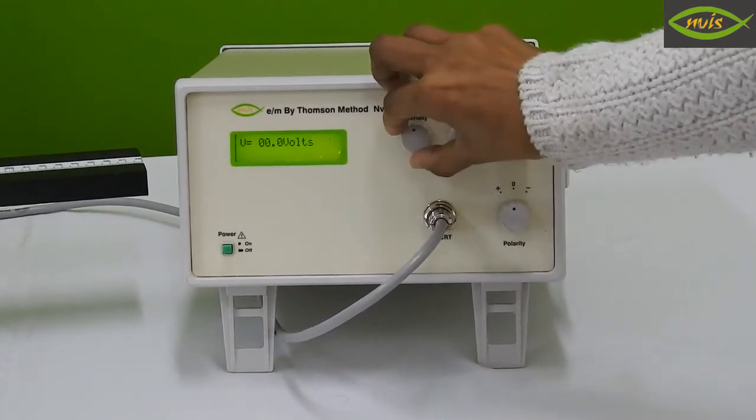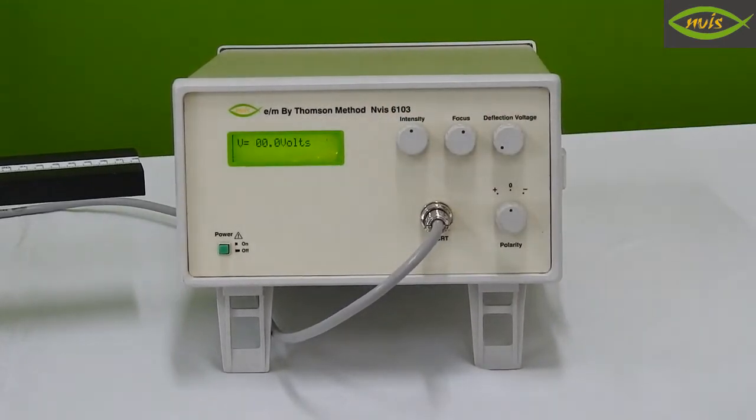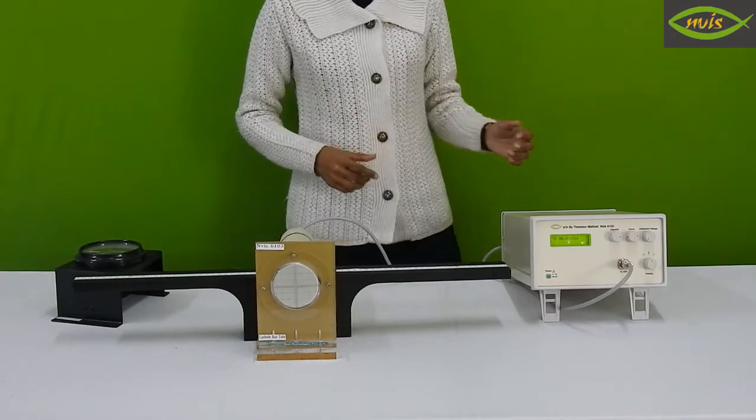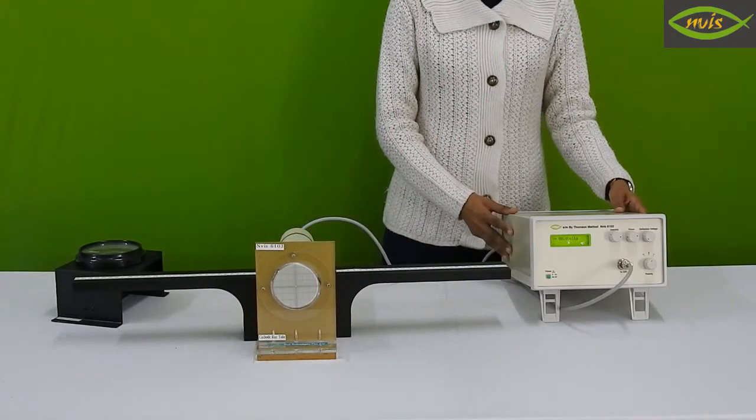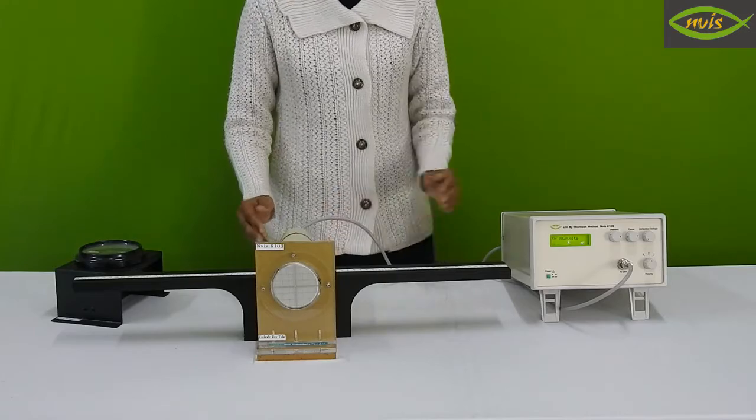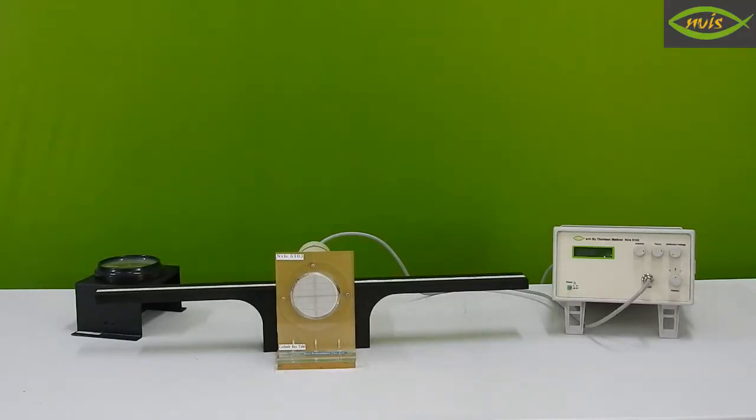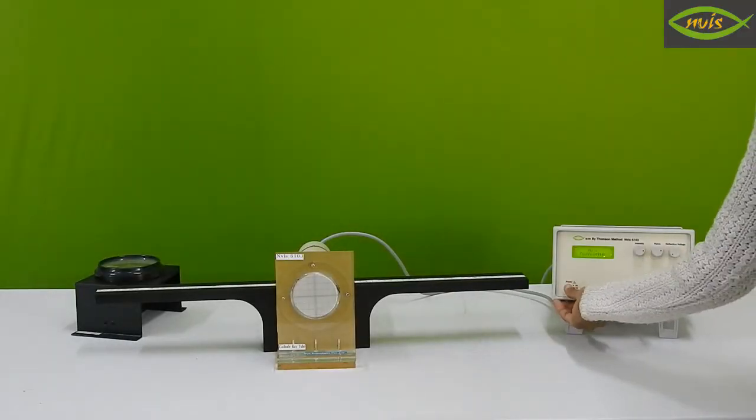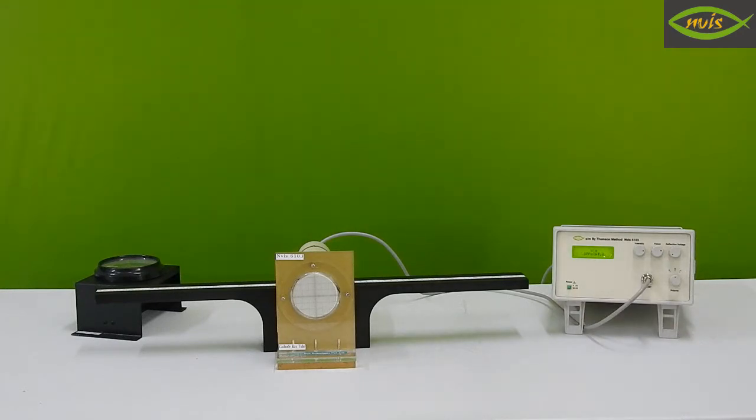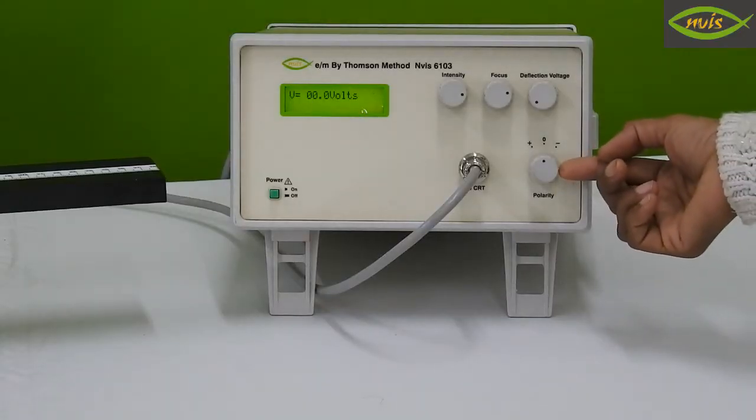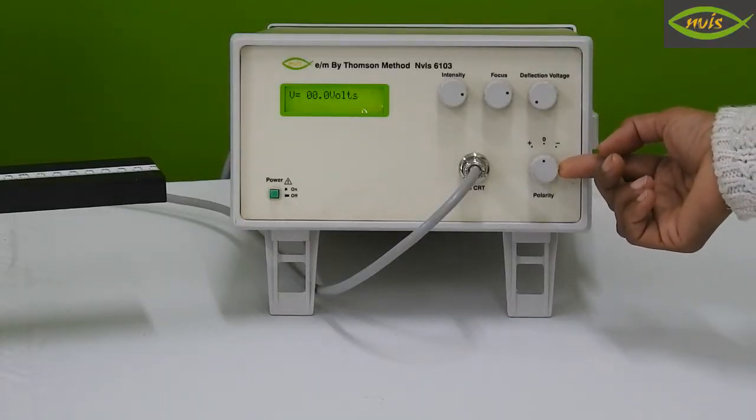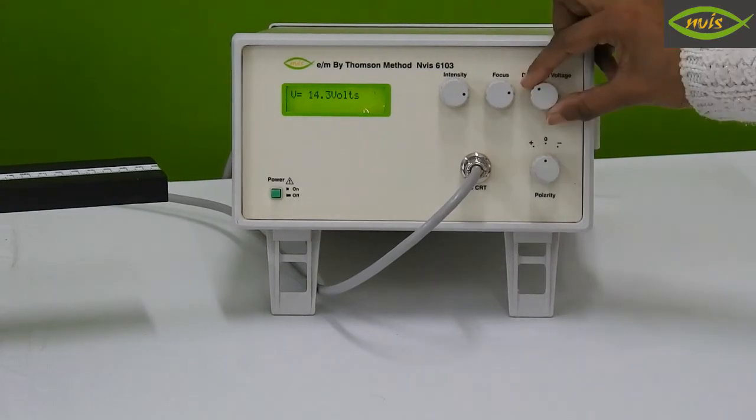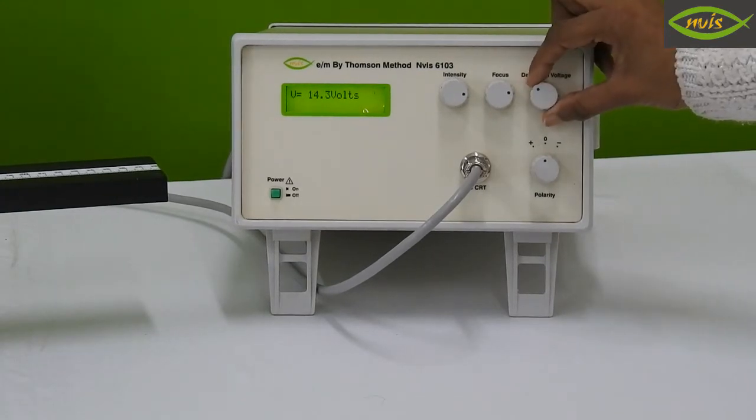Connect the CRT to octal socket of instrument. Keep instrument to south direction, far from CRT. The cathode ray tube should be accurately placed with its longitudinal axis in the magnetic meridian. Polarity selector switch should be at zero position. Set the deflection voltage potentiometer at anti-clockwise direction.